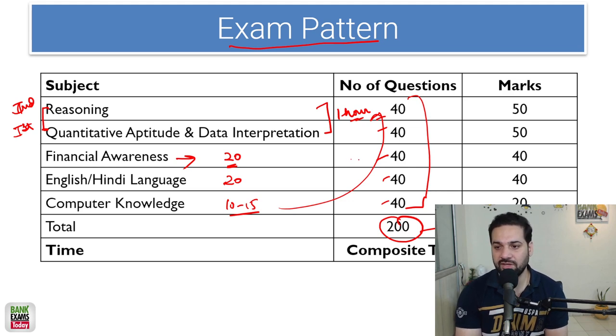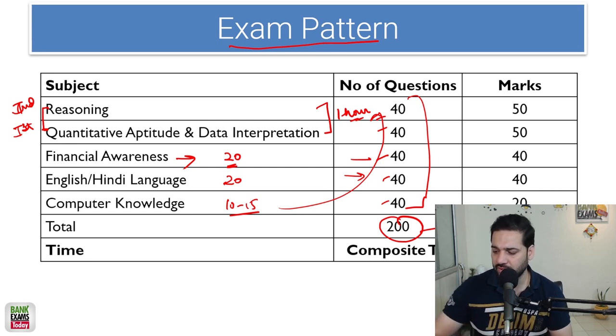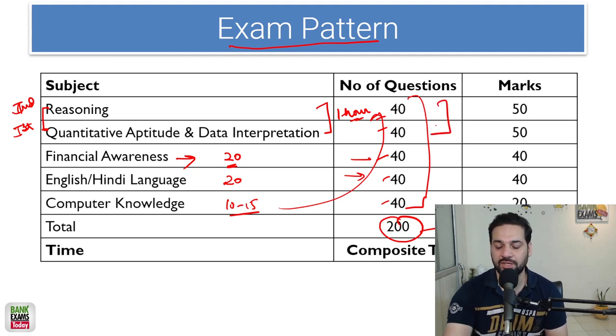Jo 5 se 10 minute bachte hai you will go back to reasoning aur quantitative aptitude section. I recommend just read all the financial awareness and English. Time is not a constant in English and financial awareness, even in the computer awareness. Time constant hota hai reasoning aur quantitative aptitude mein.